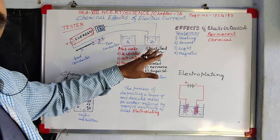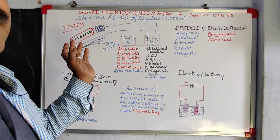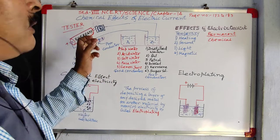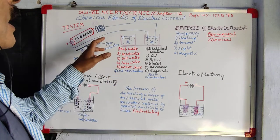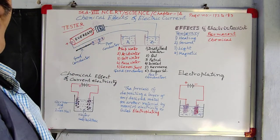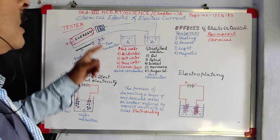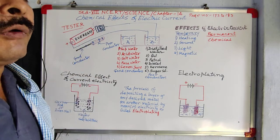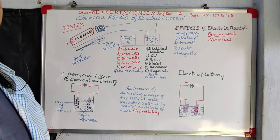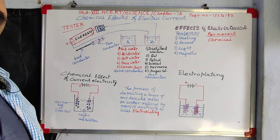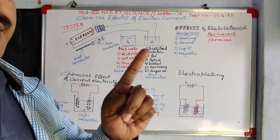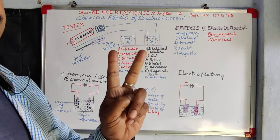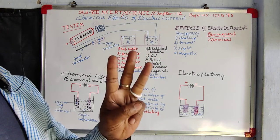If it is a bad conductor, no deflection. So even a weak current can be detected with the help of a magnetic compass. This we can call a magnetic compass tester, or compass tester, or magnetic tester. So we get three kinds of testers: bulb tester, LED tester, and magnetic tester.